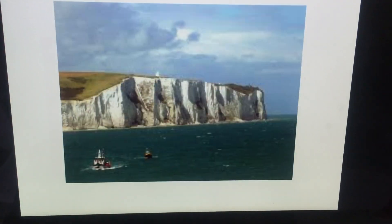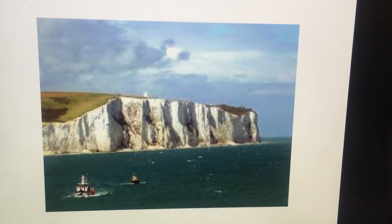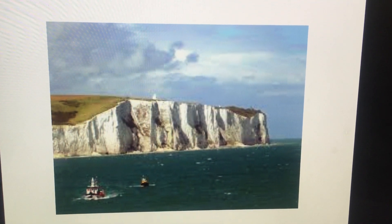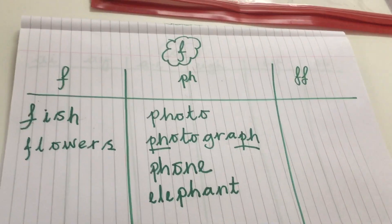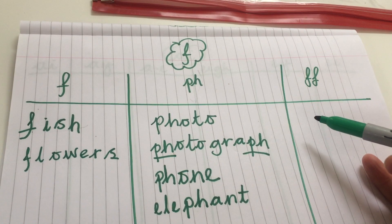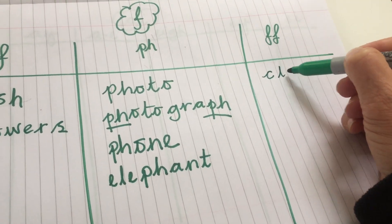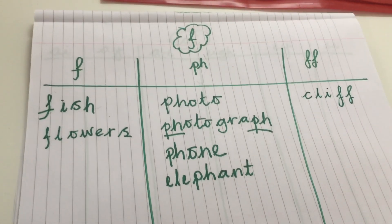Let's have a look at the next picture. And the next picture, how beautiful, is a picture of a cliff. Cliff. Let's have a look here. And cliff ends in a double F digraph. So it's going to go into this column here. Could you write the word cliff into this column here? C-L-I-F-F. Fantastic.